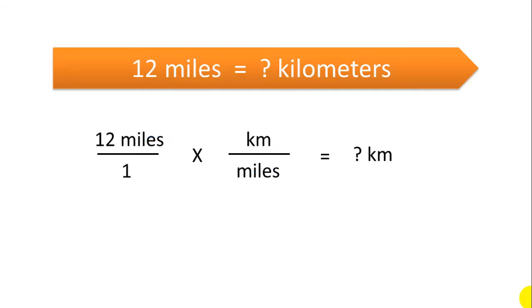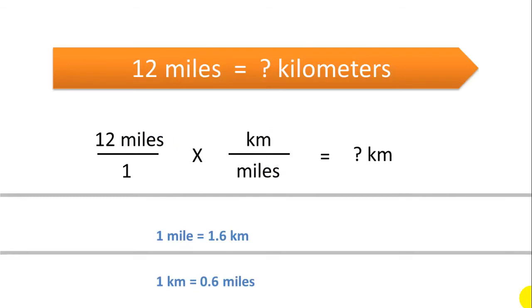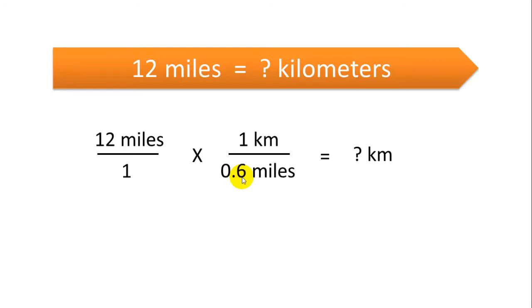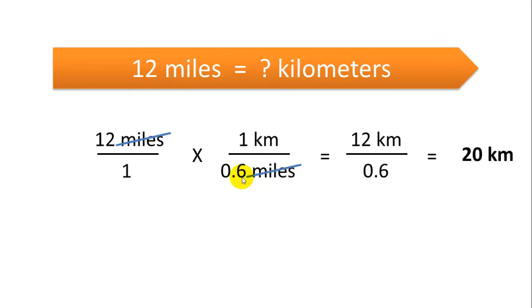We look online and find that one mile equals 1.6 kilometers, or that one kilometer equals 0.6 miles. It doesn't matter which one we use as long as we put it in the format of kilometers over miles. Using the second option, we get 1 kilometer per 0.6 miles. So: 12 miles over 1, times 1 kilometer per 0.6 miles. The miles cancel out and we get 12 kilometers over 0.6. We do that division and get 20 kilometers.